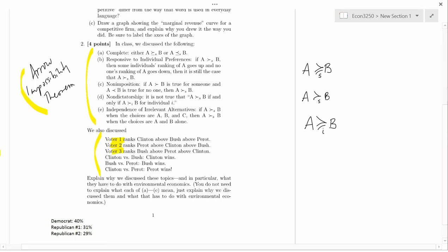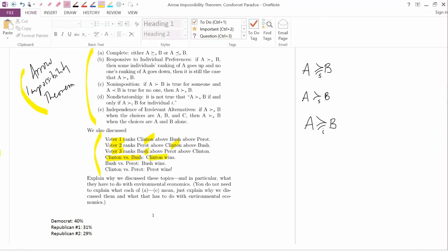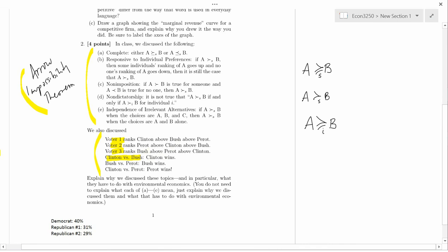Let's see the result of matchups of pairs of these candidates. Clinton versus Bush. Voter one puts Clinton ahead of Bush. Voter two also puts Clinton ahead of Bush. Voter three puts Bush ahead of Clinton. So Clinton wins two to one. The next head-to-head matchup is between Bush and Perot. Voter one ranks Bush above Perot. Voter two ranks Perot above Bush. And voter three ranks Bush above Perot. So Bush wins two to one above Perot.